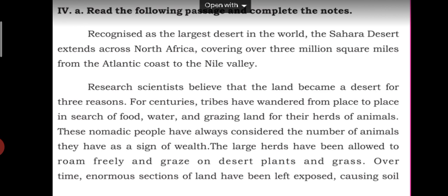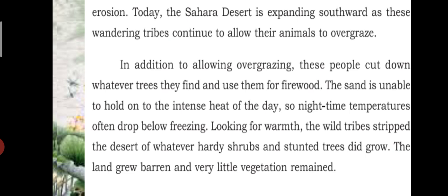These nomadic people have always considered the number of animals they own as a sign of wealth. The large herds have been allowed to roam freely and graze on desert plants and grass. Over time, enormous sections of land have been left exposed, causing soil erosion. Today, the Sahara Desert is expanding southward as these wandering tribes continue to allow their animals to overgraze.